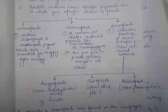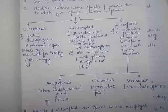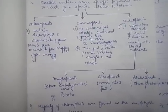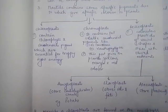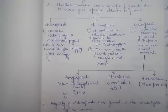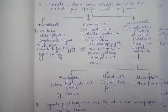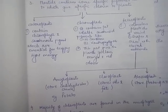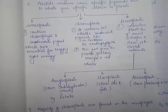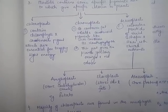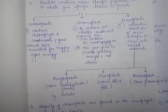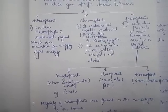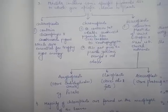Chromoplasts contain fat-soluble carotenoid pigments — carotene, xanthophyll, etc. For MCQs, remember which pigments exist in chromoplasts: fat-soluble carotenoids. Chromoplasts give yellow, orange, and red colors to plants.